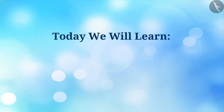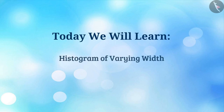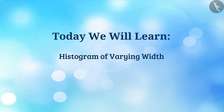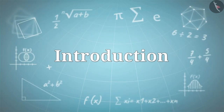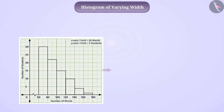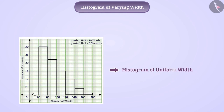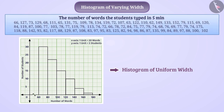Today we will learn about histograms of varying width. In the previous video we learned about the histogram of uniform width, in which we represent the number of words the students typed in five minutes as a histogram of the same width.